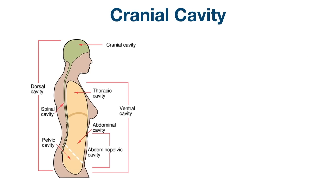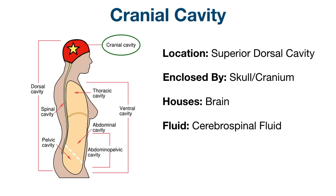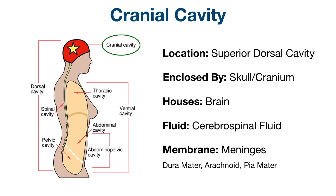Let's look at the cranial cavity first. The cranial cavity is the superior portion of the dorsal cavity, as we can see highlighted in red. The cranial cavity is enclosed by the cranium or skull and it houses the brain. It also contains cerebrospinal fluid that helps protect and cushion the brain. Each cavity is lined with thin sheets of tissue called membranes. The cranial cavity is lined by a three-layer membrane called the meninges, which protect and cover the brain. The three meningeal layers are the dura mater, arachnoid, and pia mater.